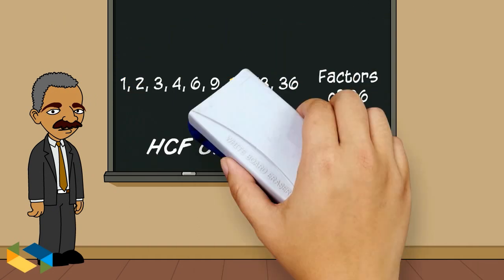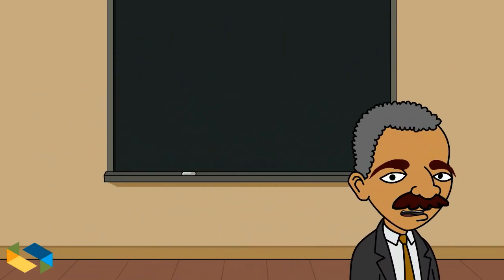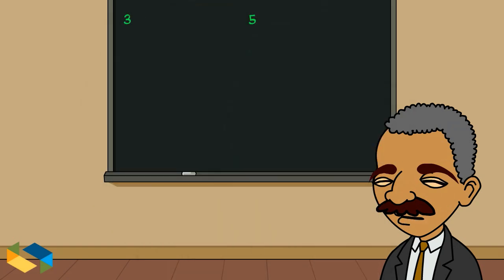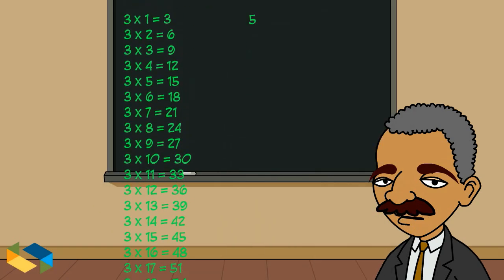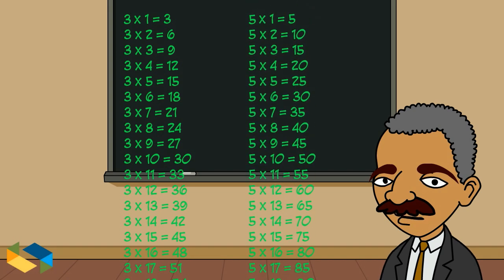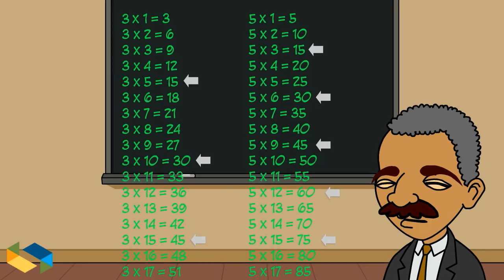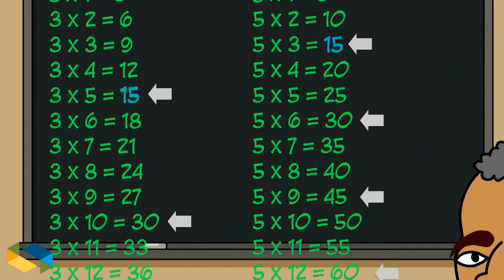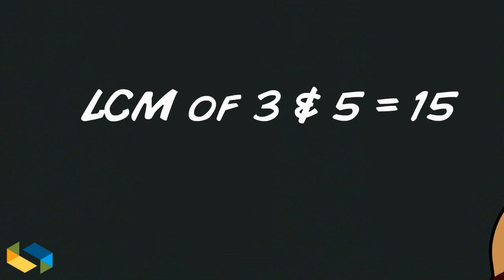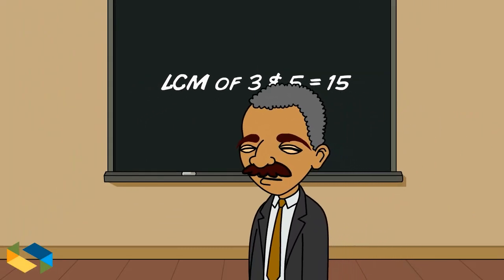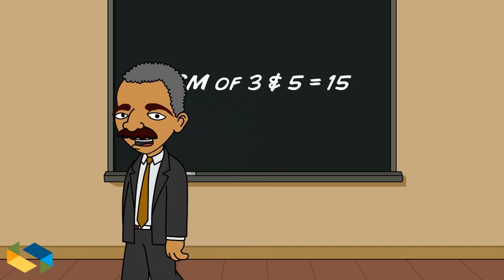Simple isn't it? Now let's look at these two numbers 3 and 5. These are the multiples of 3 and these are multiples of 5. As you can see, unlike factors the multiples go on and on and on, though not beyond infinity. And voila, there are some common numbers here too. The smallest or the lowest being 15. So the lowest common multiple or LCM of 3 and 5 is 15.